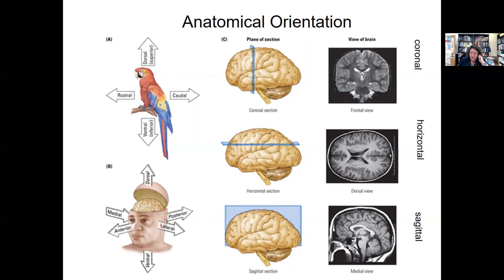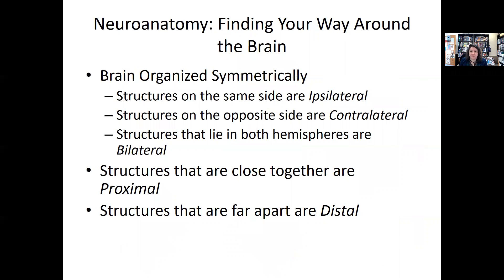A couple other things that are helpful here. Structures that are on the same side of the brain are called ipsilateral — on the same side. Those that are on different sides of the brain are called contralateral — different sides. Things that are in both hemispheres are bilateral. Structures that are close together are called proximal, and structures that are further apart are called distal — distal like distant.